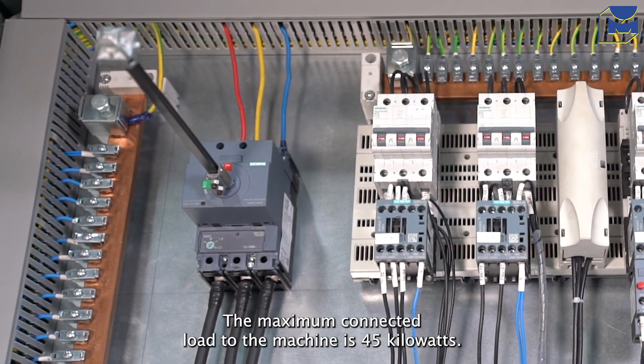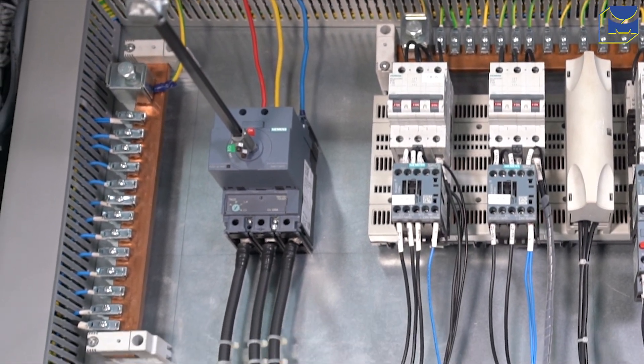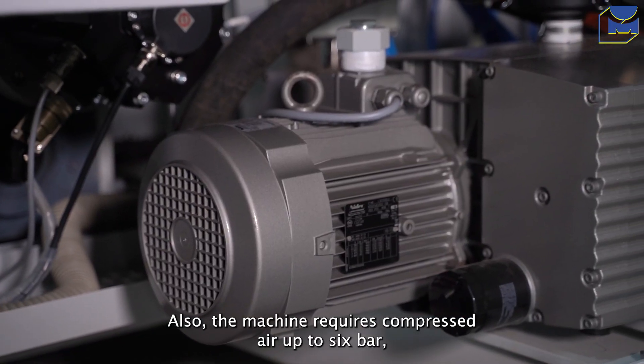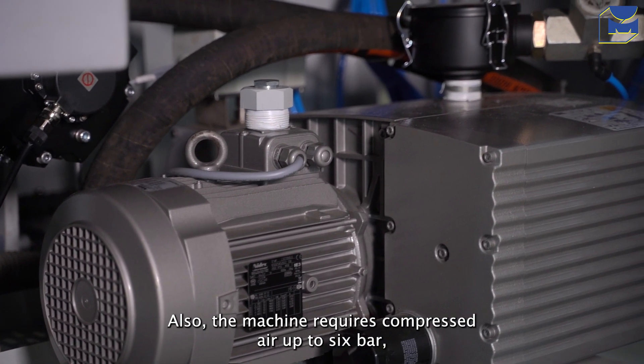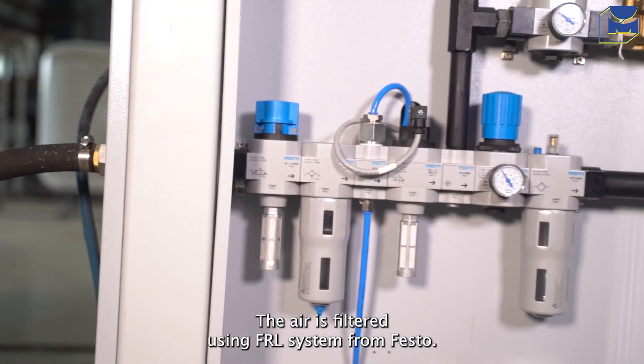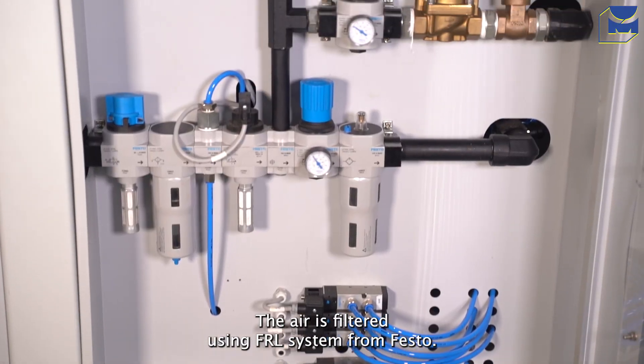The maximum connected load to the machine is 45kW, connected to the main electrical panel. Also, the machine requires compressed air up to 6 bar which comes from an air compressor. The air is filtered using FRL system from Festo.